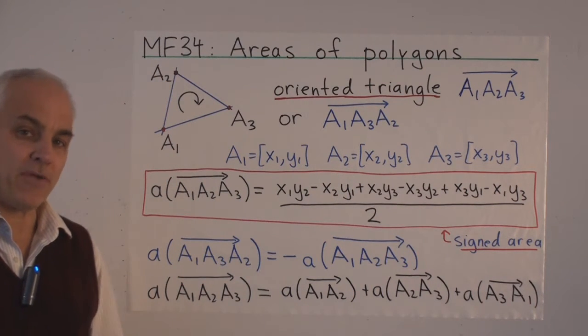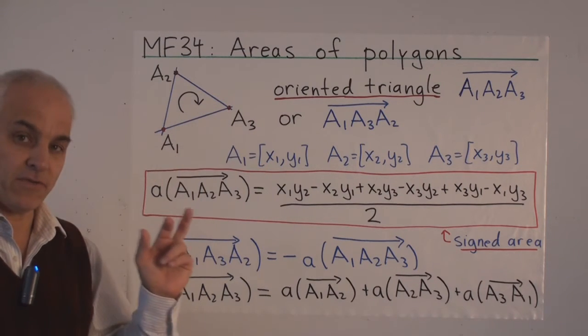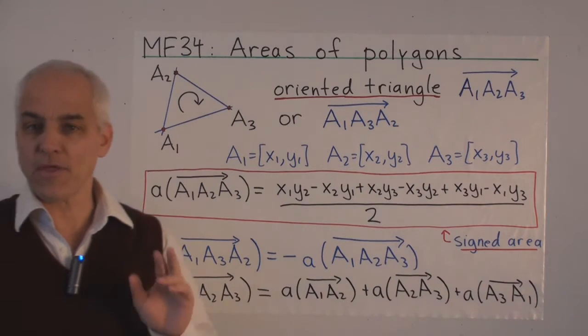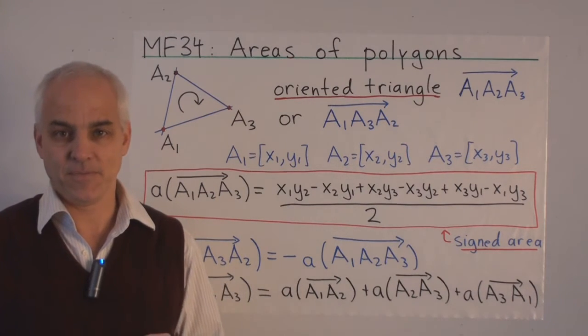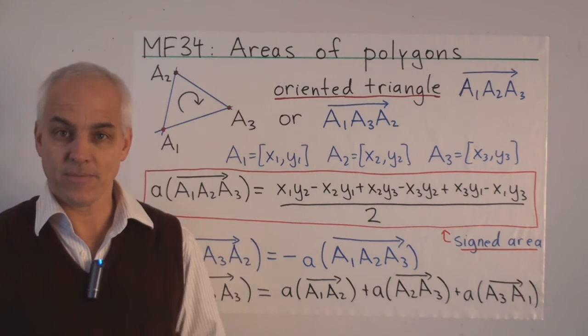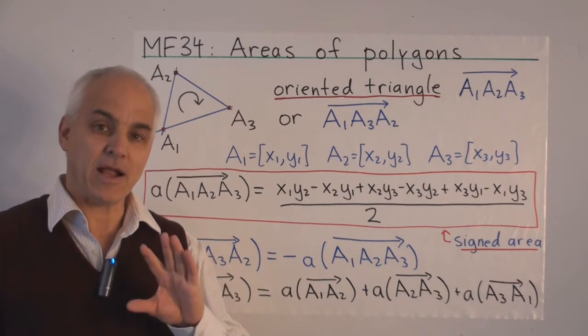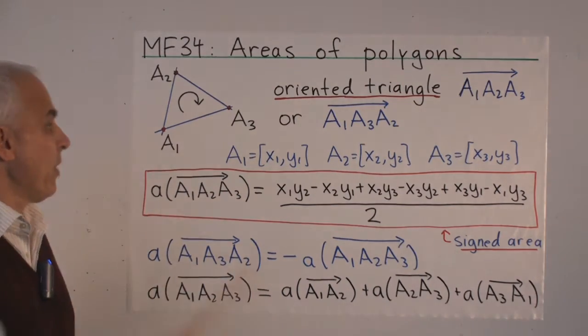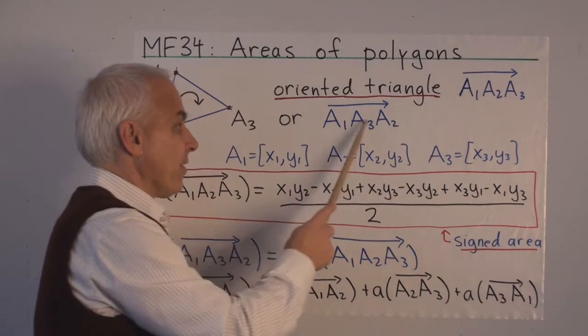And I also point out that there's a subtle difference between this notion and that of a triangle in that for an oriented triangle we do not require the three points to be distinct and we do not require that they be non-collinear. So the three points can be completely arbitrary. They can even all three coincide. We'll still talk about an oriented triangle.